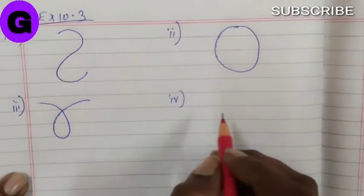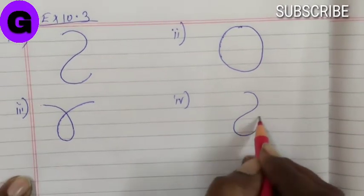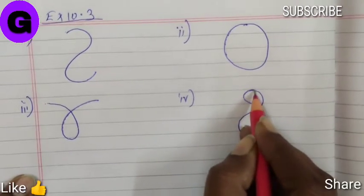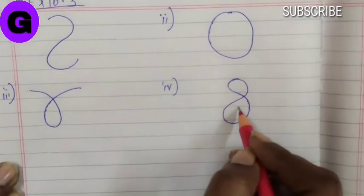Number 4, closed curve that is not simple. Now closed curve is a curve where the starting point meets the ending point. And it is not simple because they are crossing each other.